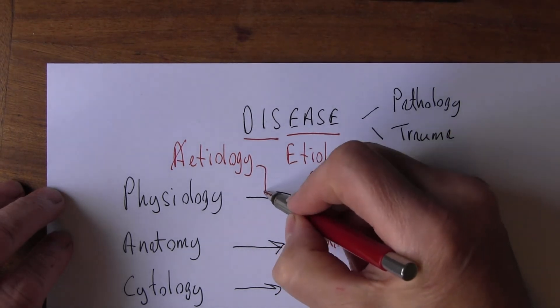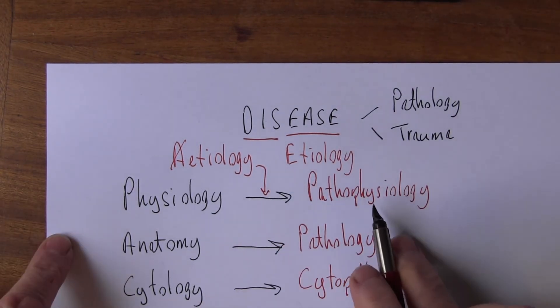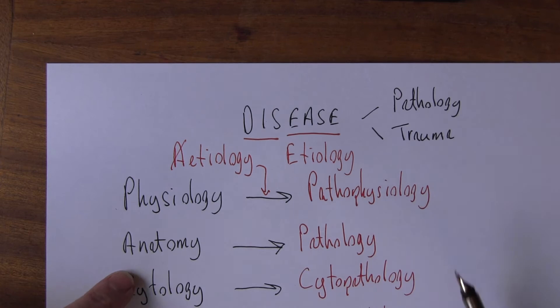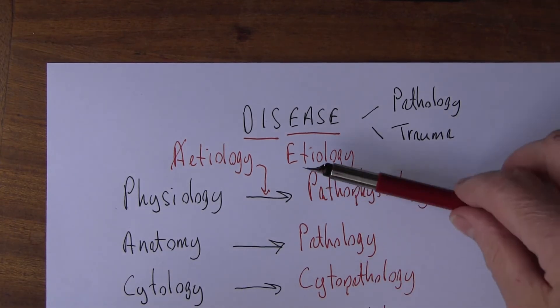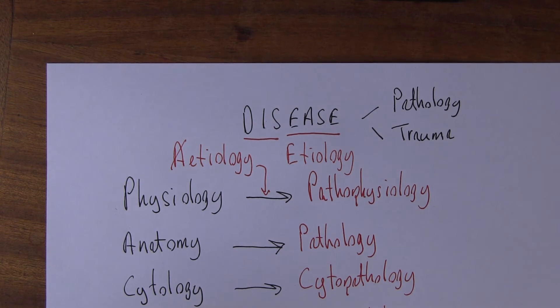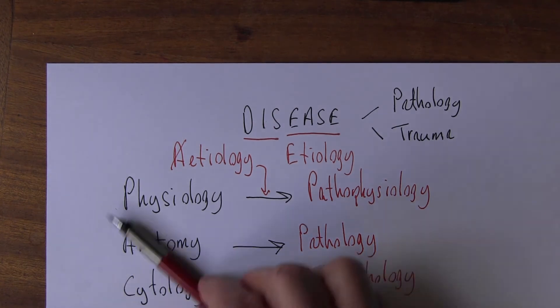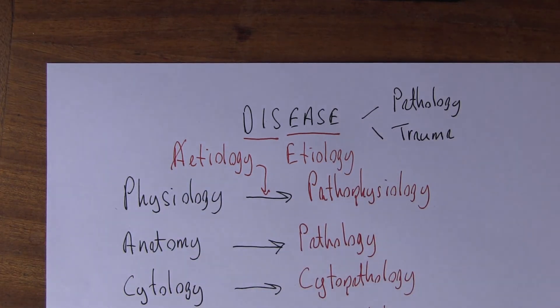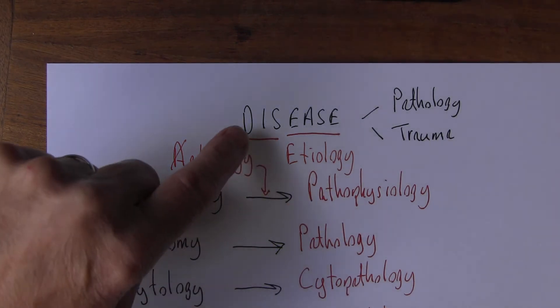Etiology is that which changes physiology into pathophysiology or that which changes anatomy into pathology. It's what causes it to become abnormal. Etiology is that which causes disease - an etiological factor working on the physiology or the anatomy to make it go wrong.